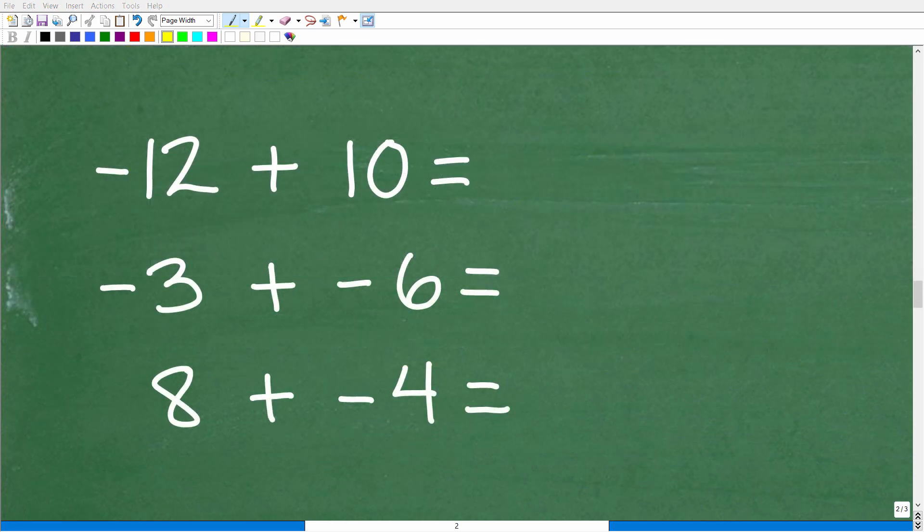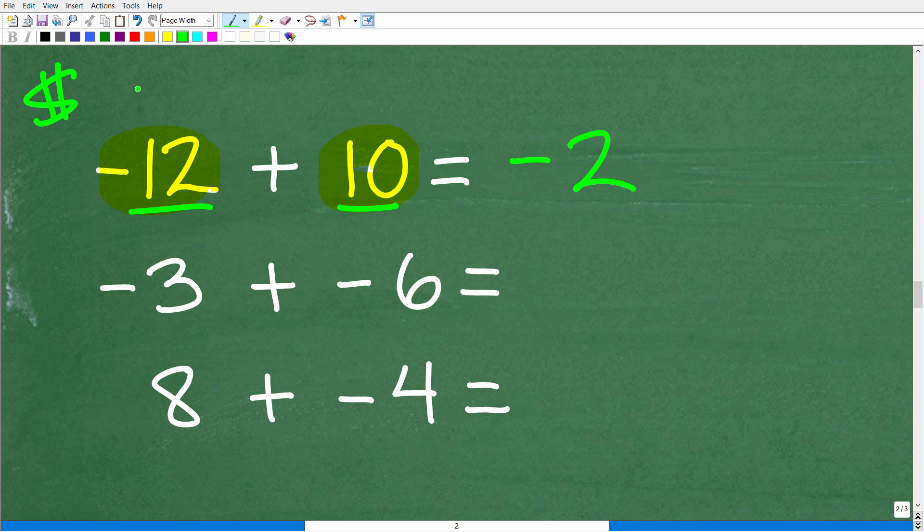Here are three easy practice problems. Most of you can do these in your head. Use any model that I showed you to add these numbers together. We have -12 + 10. I really like this money model. If I owe someone $12 and I have $10, I still owe them $2. I'm going to subtract these two numbers, and the greater number is negative. So the final answer is -2.